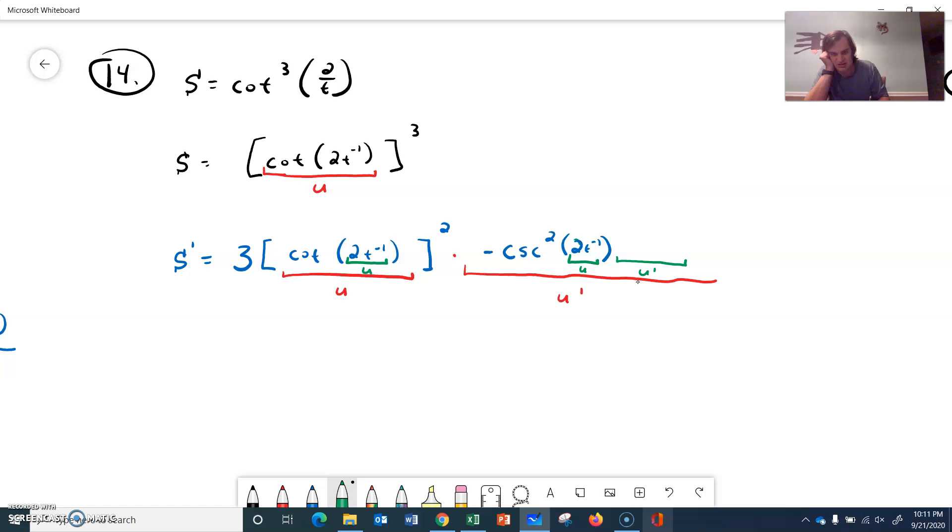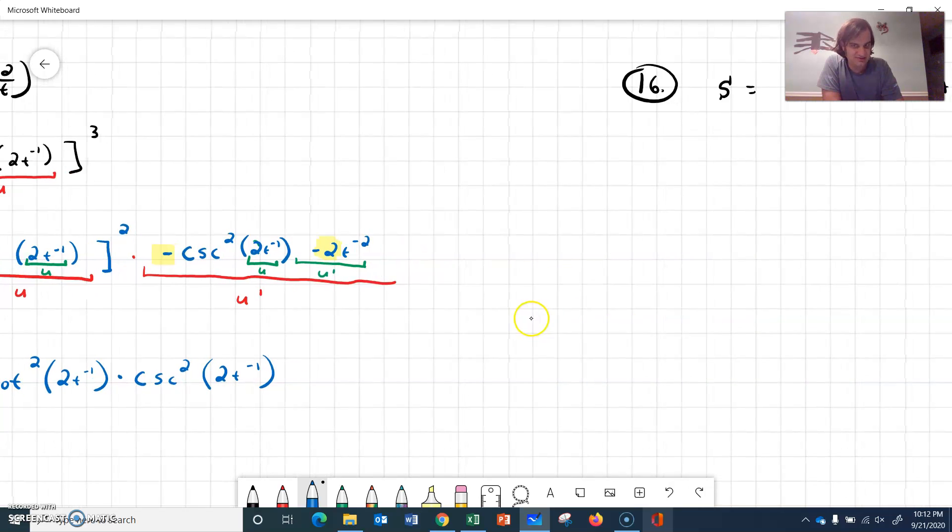This U prime will be negative 2 T to the negative 2. So let's clean that up a little bit since we're here. But there was a chain rule inside a chain rule. So let's see what we can clean up. And S prime will be, here's a 3, here's a negative, here's a negative 2. So it looks like we can clean that up to be 6. If we want to pull these things out front, we could pull the T to the negative 2 out here. Then we'll have cotangent squared of 2 T to the negative 1. And that would be times cosecant squared of 2 T to the negative 1. All right. Whether you clean it up or not is up to you. Sometimes when they get a little bit messy, it's really hard for me to read, though. So it might be good to clean some of these up if a lot is happening.